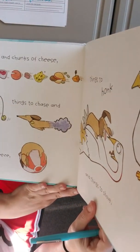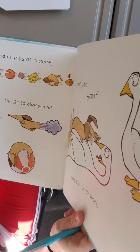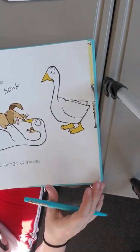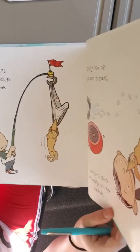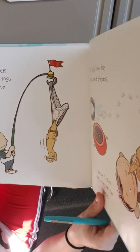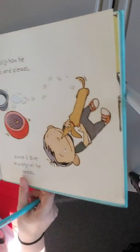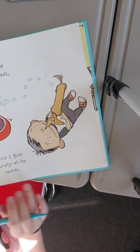Bits of beef and chunks of cheese, things to chase and things to squeeze, things to honk and things to shove, and things that only dogs could love. Ew, those look like underwear. It's silly how he prays and pleads since I give...